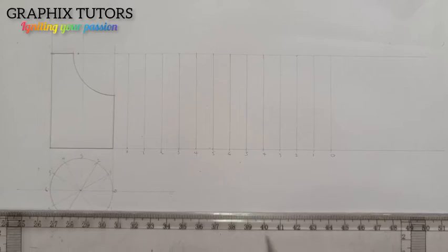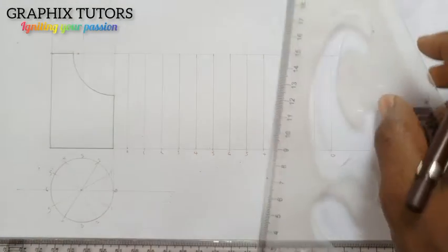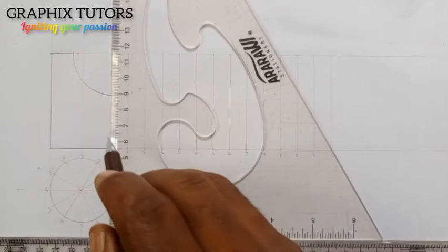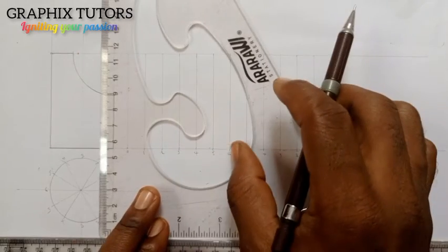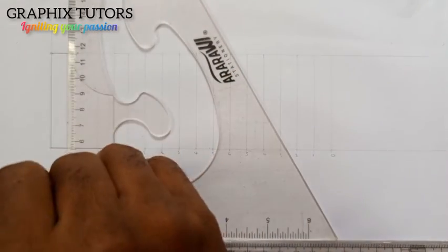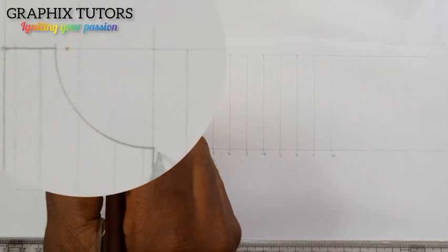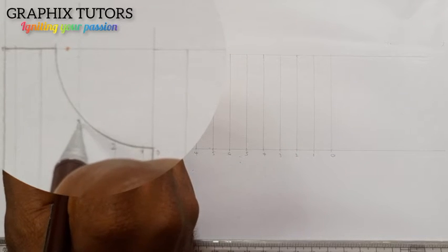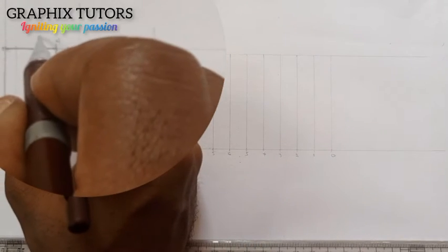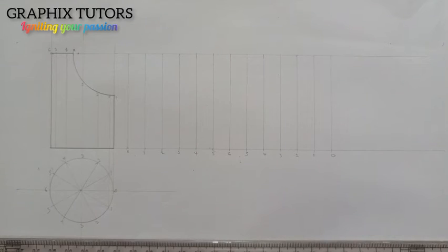Next I'm going to project all these points from the circle up to touch the shape that I carved out. For point one, I take it to touch here. For two, I do the same. For three it's already there. For four and five I do the same. So we have point zero, one, two, three, four, five, and six. Points four, five, and six are on the same point.